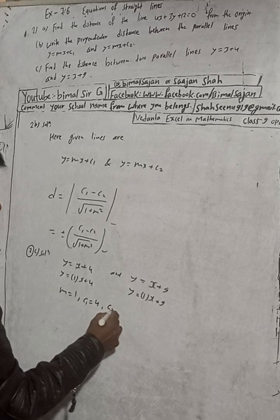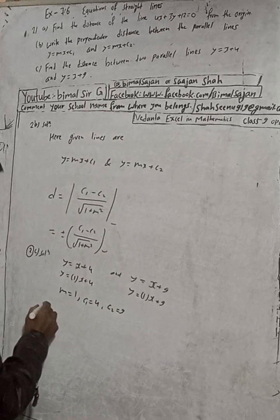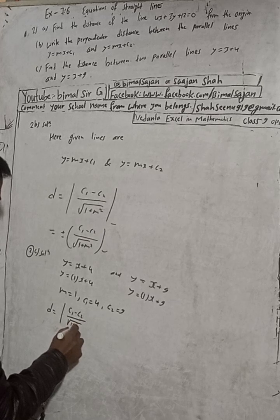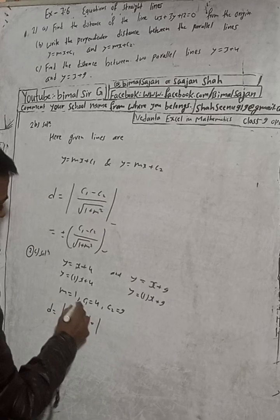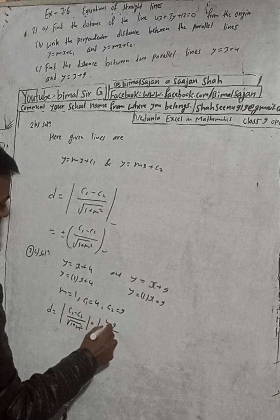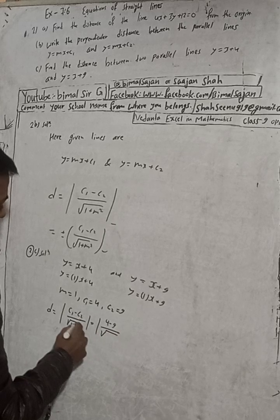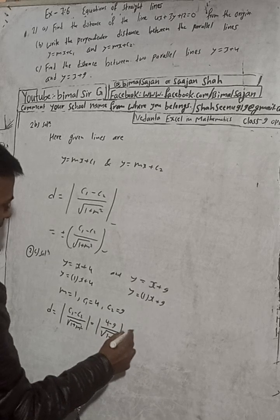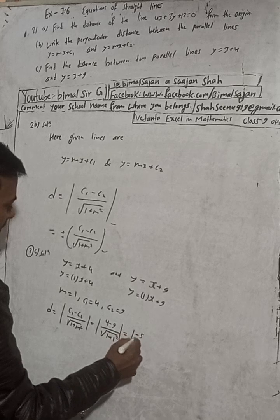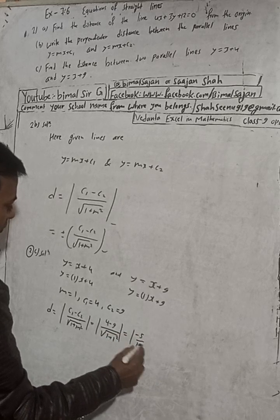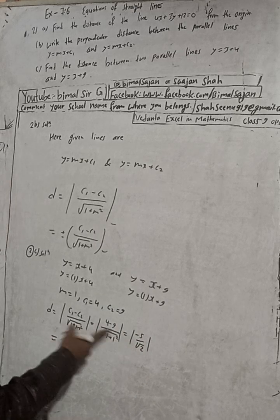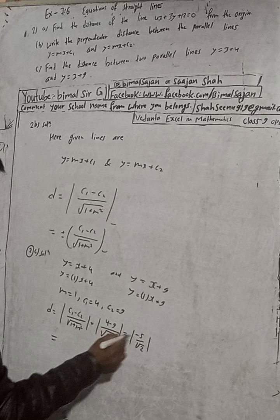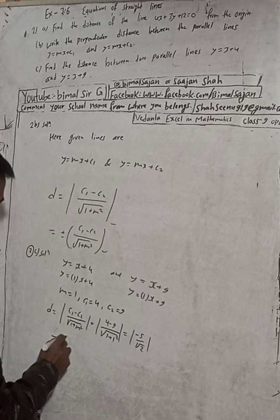Now find the distance. D equals modulus of c1 minus c2 divided by root of 1 plus m squared. Substituting: 4 minus 9 divided by root of 1 plus 1 squared. This equals negative 5 divided by root of 2, which equals 5 divided by root 2. Since distance is always positive, we take the positive value.